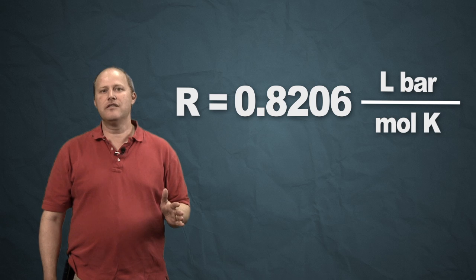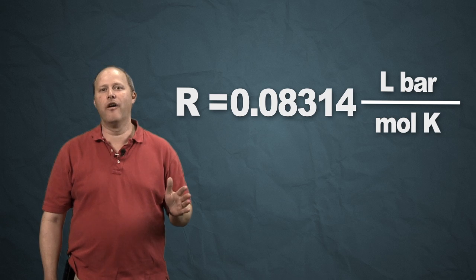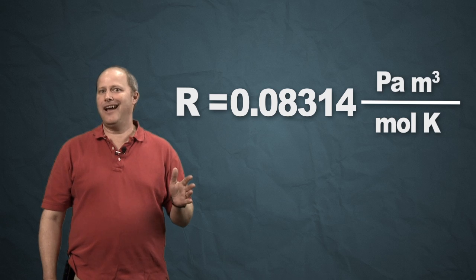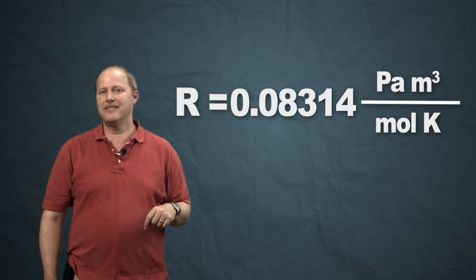But if you had pressure of bars, it's 0.08314 liter bars per Kelvin mole. Or alternatively, maybe you have Pascal cubic meters, then it's 8.314.